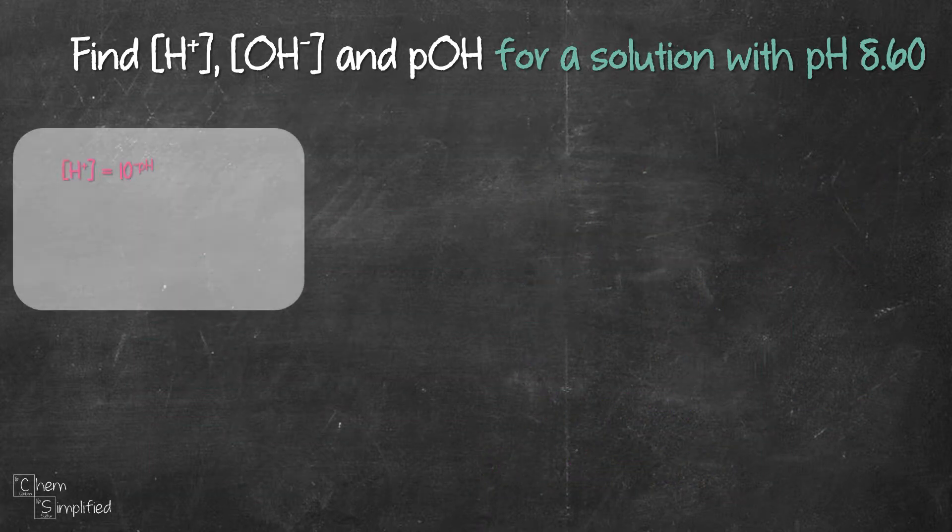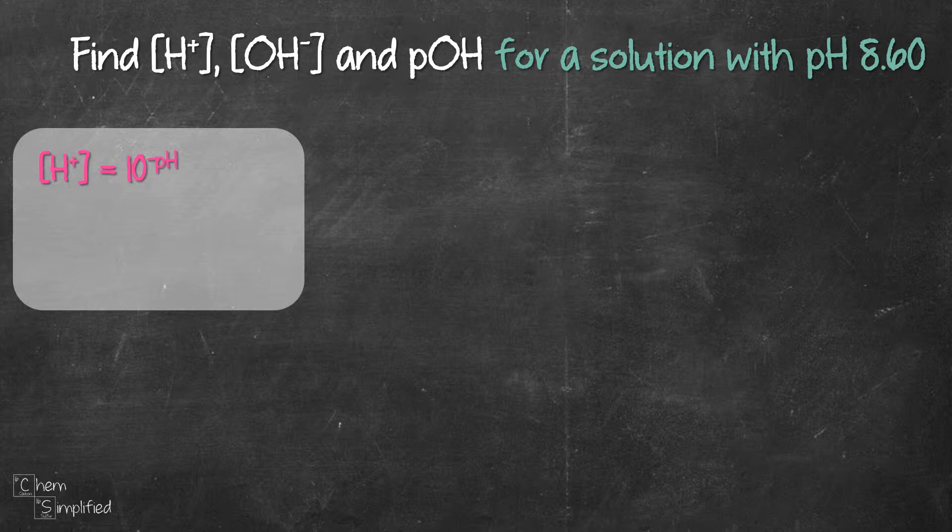The first formula we'll use is [H+] = 10^(-pH). We plug in 8.6 for pH, so we get 10^(-8.6), and that comes out to be 2.5 × 10^(-9) molar. Don't forget the unit.